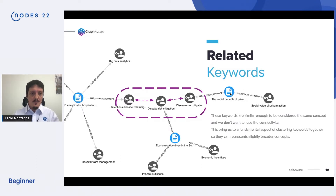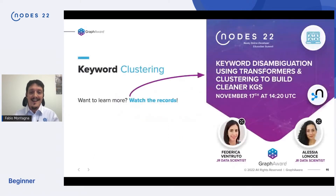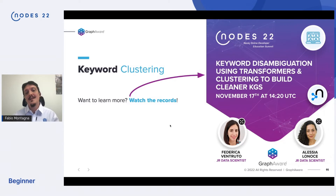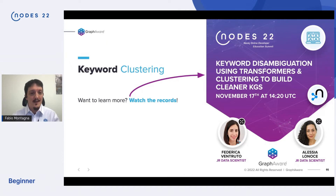This brings us to the huge topic of how one could cluster keywords in a knowledge graph. Luckily, two colleagues of mine had a talk about that, so I warmly suggest you watch the recording. In the meanwhile, I'll assume we followed the instructions and had our keyword properties clustered.